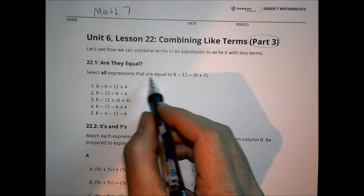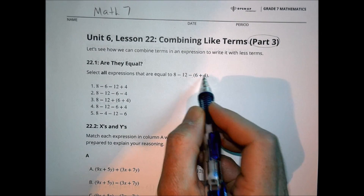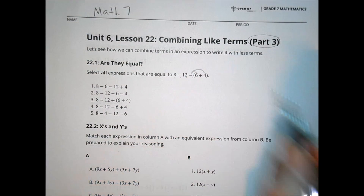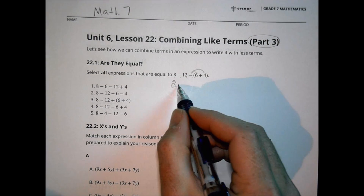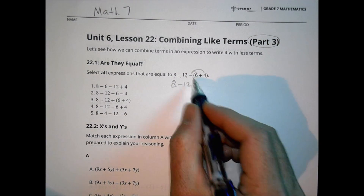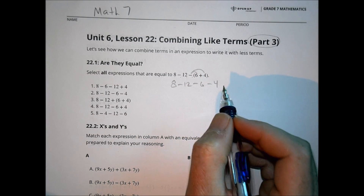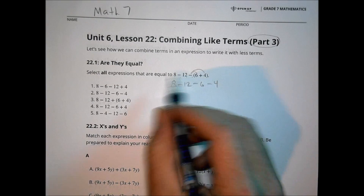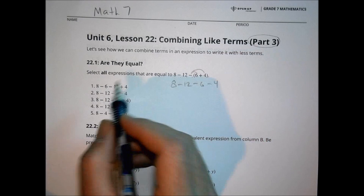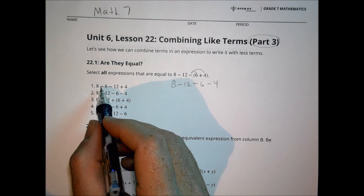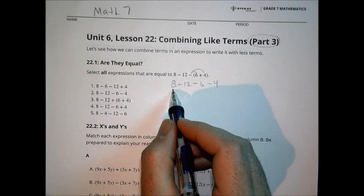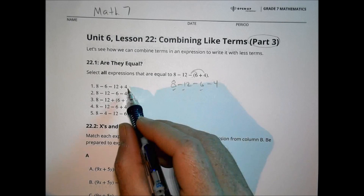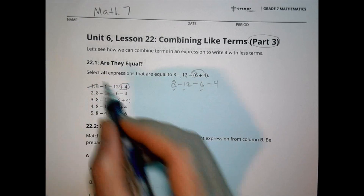The first one says: select all expressions that are equal to 8 minus (12 minus 6 plus 4). If we distribute the negative through, that's going to change what it looks like. So we can have 8 minus 12 minus 6 minus 4. We can also rewrite things as addition. Let's look at our choices. Choice A has 8 minus 6, which is 8 minus 6 minus 12 minus 12, but we have a minus 4 and they have a plus 4, so that's going to be off — no to that one.